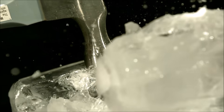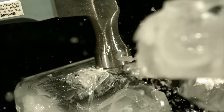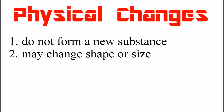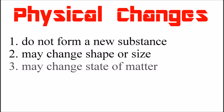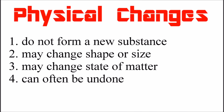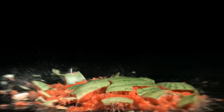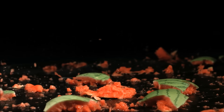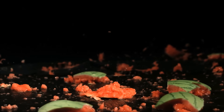Physical changes do not form a new substance. A physical change may change the shape or size of an object, or change the state of a substance's matter. Many physical changes can be undone in some way. In a physical change, you end up with the same substance you started with, even if it looks different.